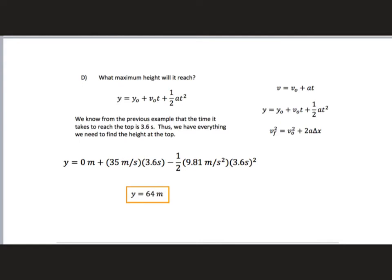The next part of the problem asks for the maximum height. Height is a position, so we use: y equals y-naught plus v-naught·t plus one-half·a·t². The initial height y-naught is zero, v-naught is 35 meters per second, a is negative g, and we know the time is 3.56 seconds from the previous part. Plugging all of these values in, the height works out to be 64 meters.